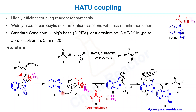Here is the mechanism of this HATU coupling reaction. A base abstracts the carboxylic acid proton, making it a carboxylate anion. This carboxylate anion then adds to the guanidine functional group in the HATU molecule, which generates intermediate C along with a hydroxy azabenzotriazole anion intermediate.